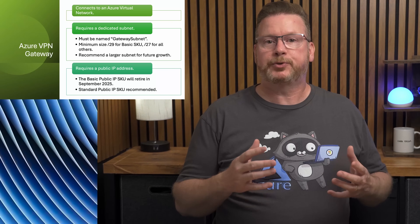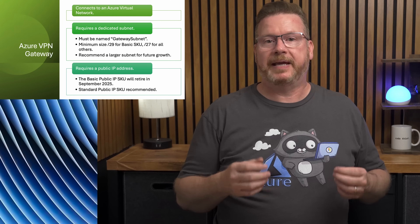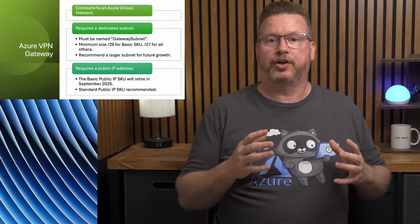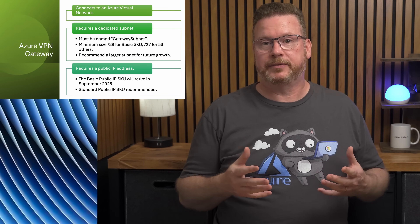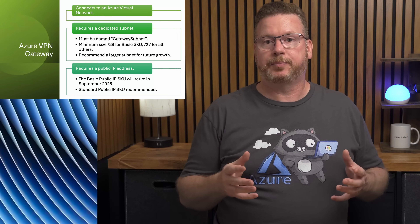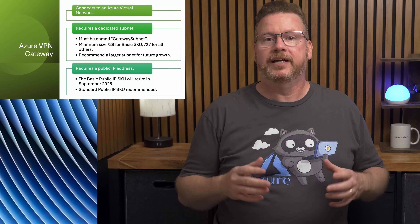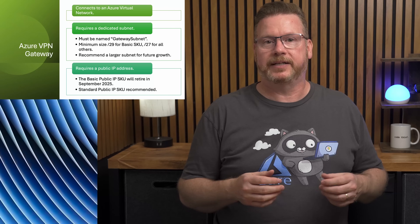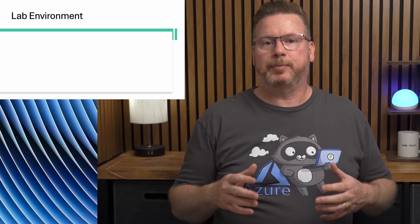You'll also need a public IP address for the gateway in Azure. The basic public IP SKU is retiring at the end of September 2025. For a while the basic VPN gateway could only use the basic IP SKU, which led some people to think the gateway itself was being retired — but that's not the case. The basic VPN gateway is still supported. The setup we're using today combines a basic VPN gateway with a standard public IP address, so it won't be affected by this change.